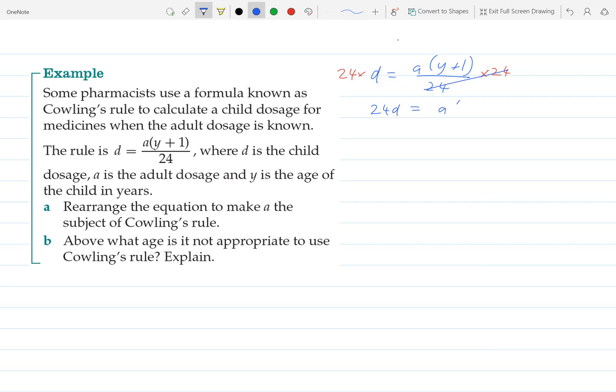If we want to get A by itself, we'll divide both sides by Y plus 1. And so that gives us A is equal to 24D over Y plus 1.